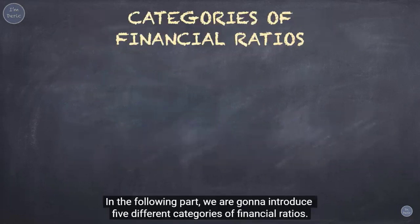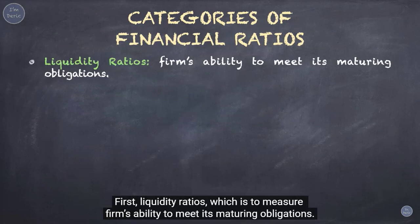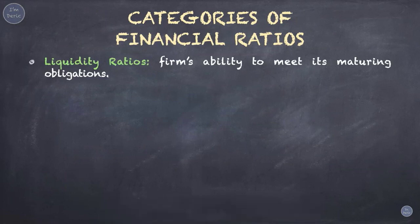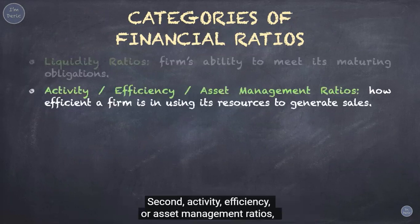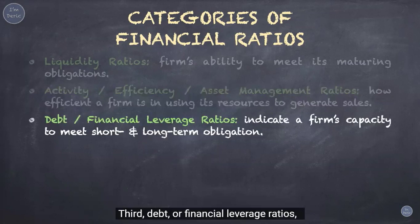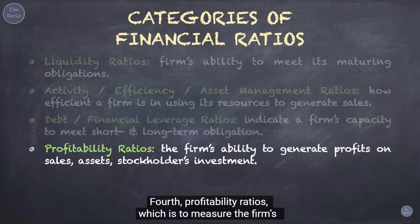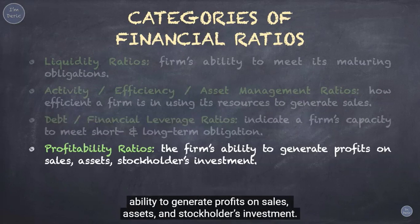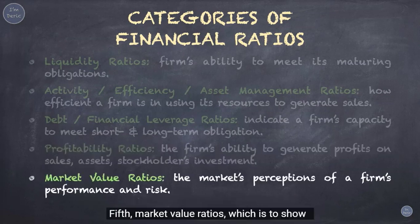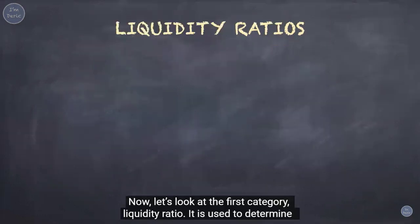In the following part, we will introduce five different categories of financial ratios. First, liquidity ratios, which measure a firm's ability to meet its maturing obligations. Second, activity, efficiency, or asset management ratios, which measure how efficient a firm is in using its resources to generate sales. Third, debt or financial leverage ratios, which indicate a firm's capacity to meet short and long-term obligations. Fourth, profitability ratios, which measure the firm's ability to generate profits on sales, assets, and stockholders' investment. Fifth, market value ratios, which show the market's perceptions of a firm's performance and risk.